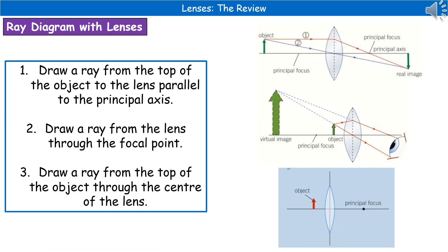We also need to be able to draw ray diagrams using these lenses. This may look a little bit complex, but as long as you go through the steps in turn, it's actually quite simple. When they give you one of these questions, they will give you the object — which could be as simple as an arrow — and they will have the lens drawn on the paper for you. The first thing you're going to do is draw a nice horizontal line from the top of the object straight into the lens, as shown in the top diagram. That goes to the central line of the lens, and once you've got that, you then bend it down so it passes through the principal focus, which will be labelled on the diagram. Just extend that line further down.